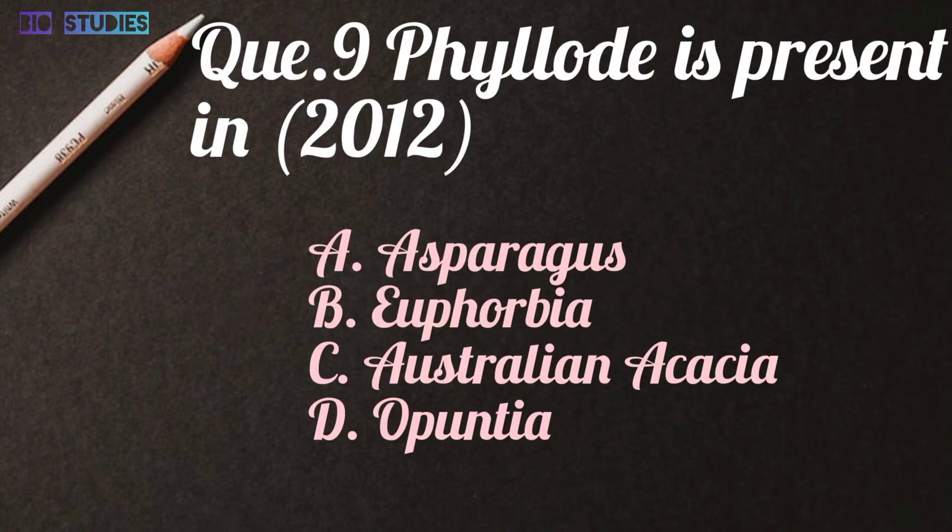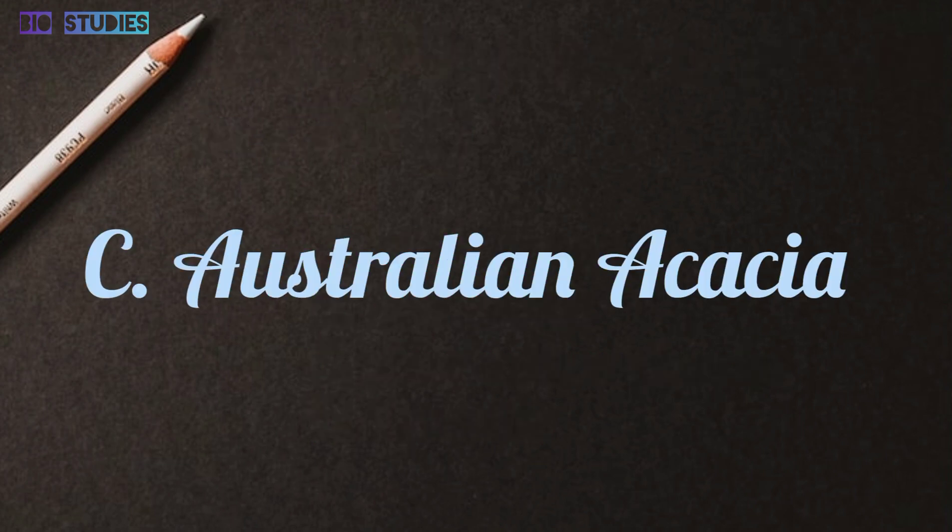Next: phyllode is present in — asparagus, euphorbia, Australian acacia, or Opuntia. Answer is C: Australian acacia.